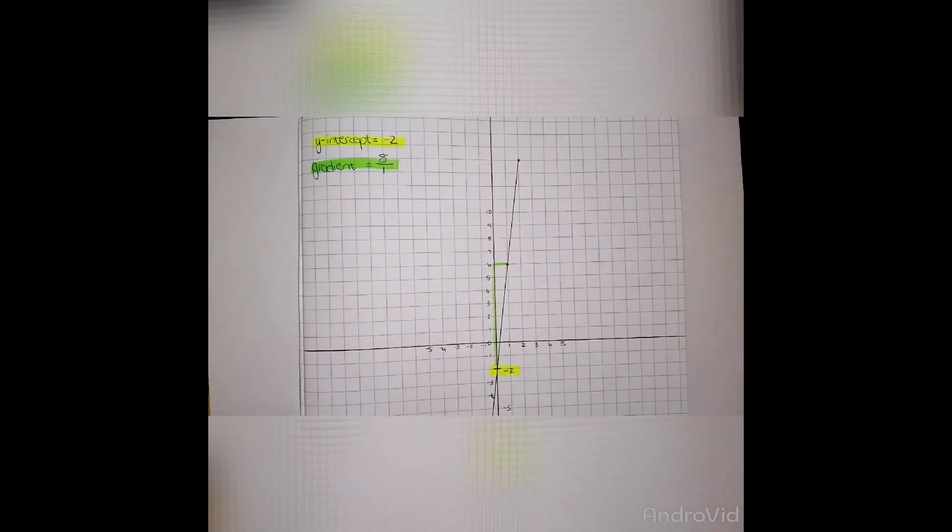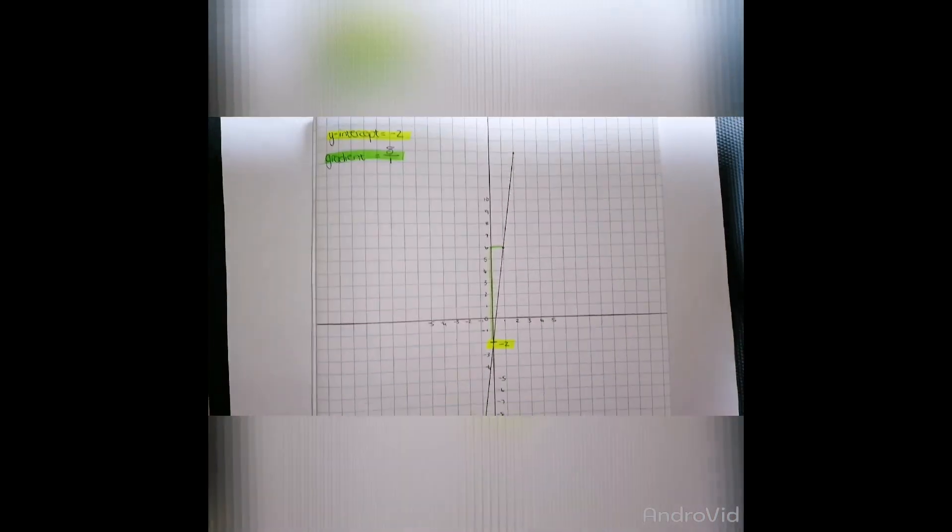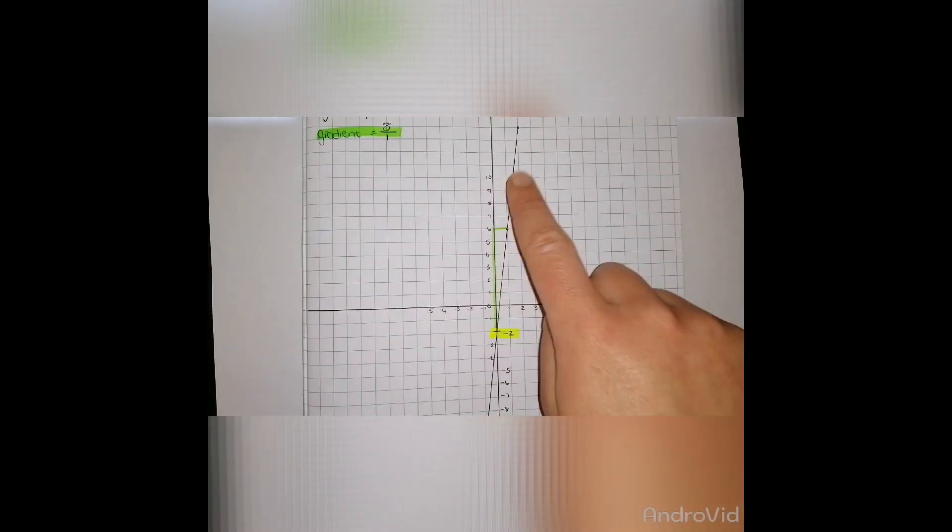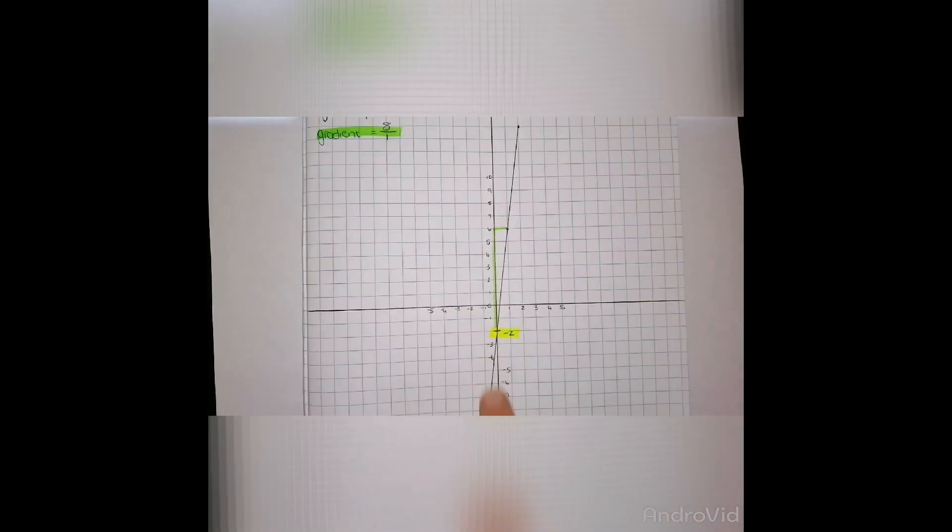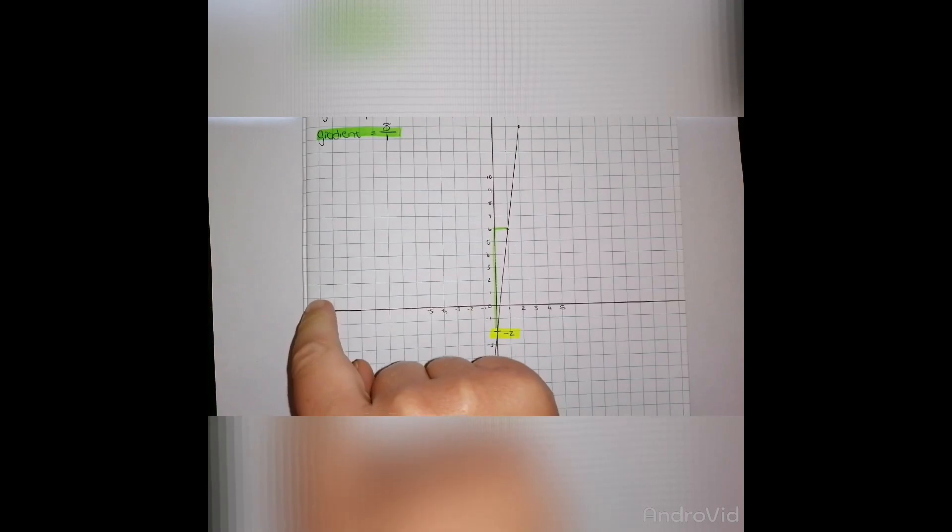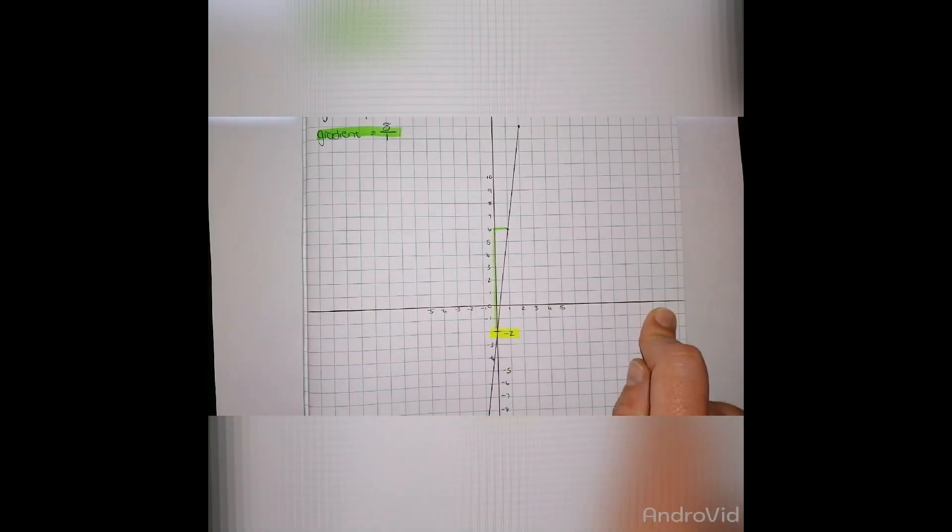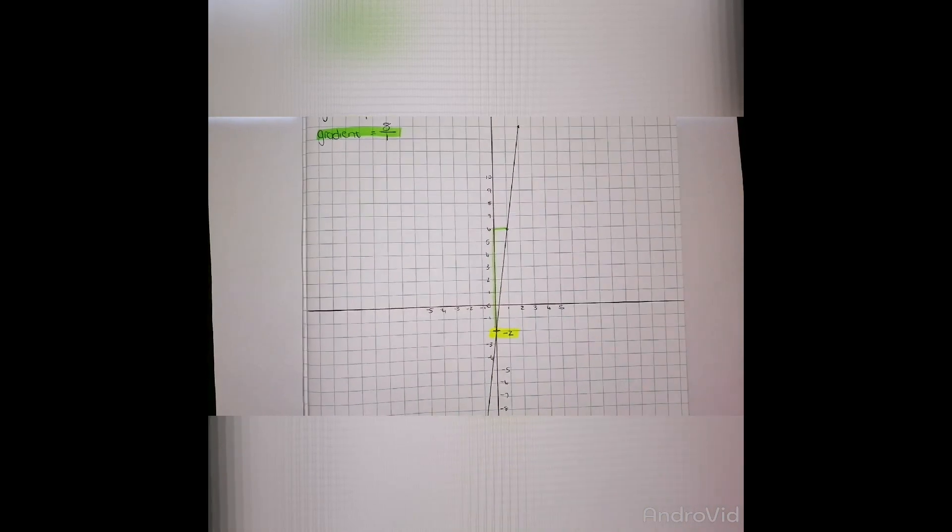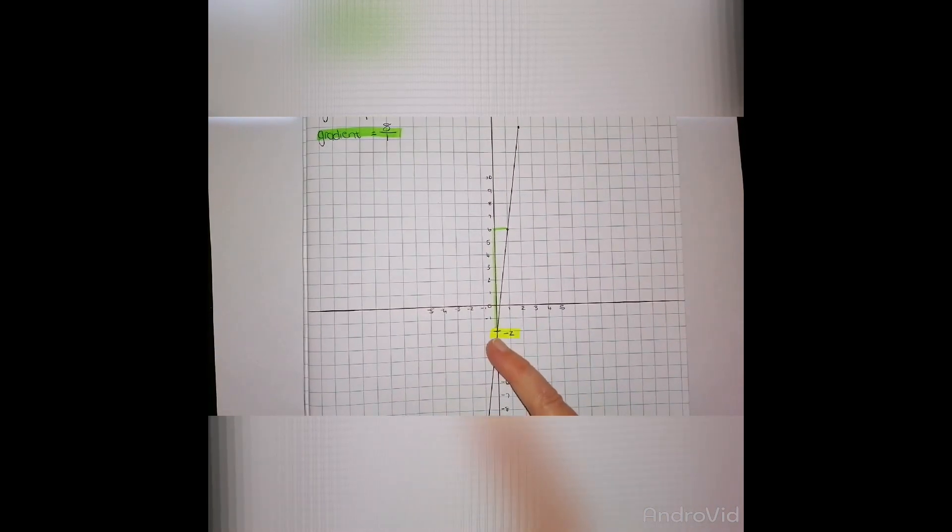When I look at my axis set, I've got a vertical as well as a horizontal axis. My vertical axis is my y-axis and my horizontal axis is my x-axis. I have identified that my y-intercept has to be at negative 2, so I'm going to plot my coordinate on negative 2.